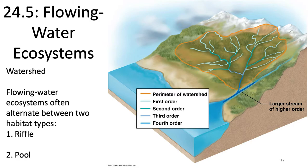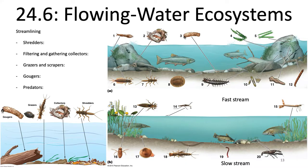Now let's talk about the animals that live in flowing water ecosystems. Streamlining is a very common adaptation — fish are flattened from the left and right side with a boat-like shape, having a point at the front to decrease frictional resistance in the water. You see a lot of streamlining in aquatic organisms, which allows them to move faster through the water.